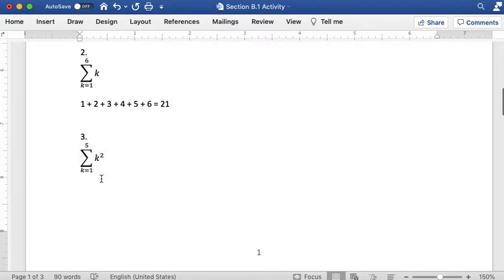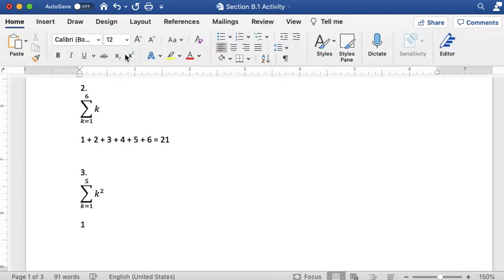Now for number 3, we are squaring k. So this is going to be 1 squared plus 2 squared plus 3 squared plus 4 squared plus 5 squared. And so we are plugging in every number from 1 to 5.